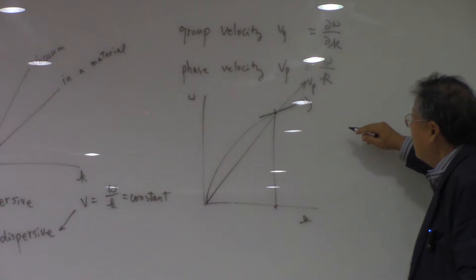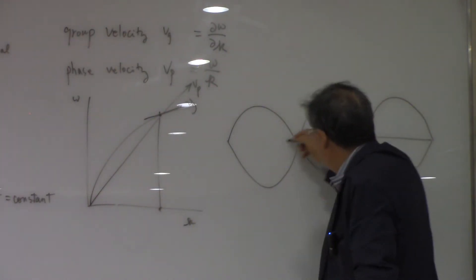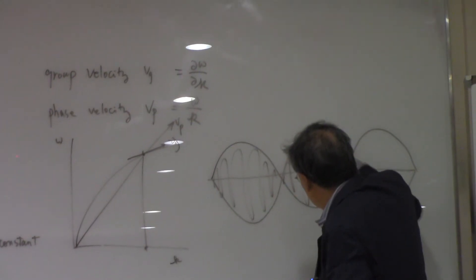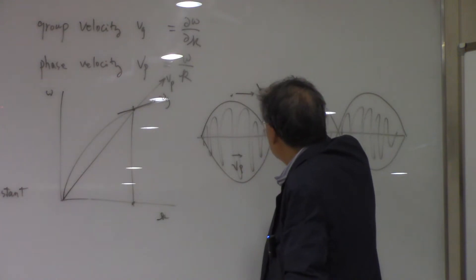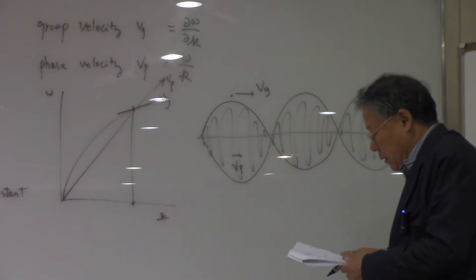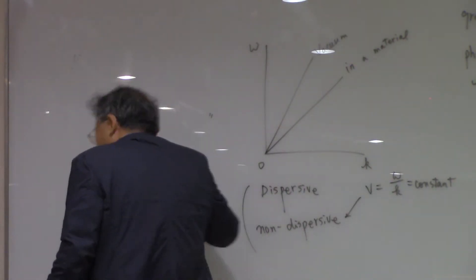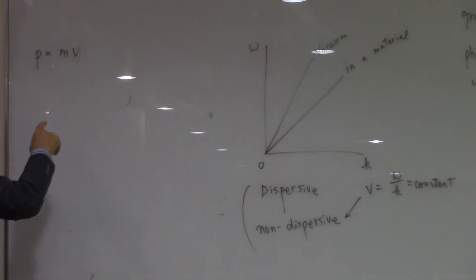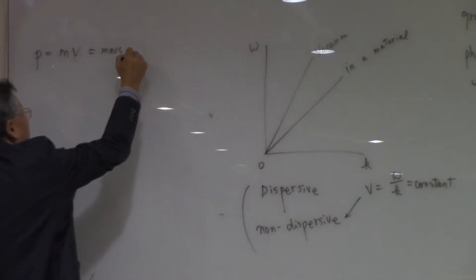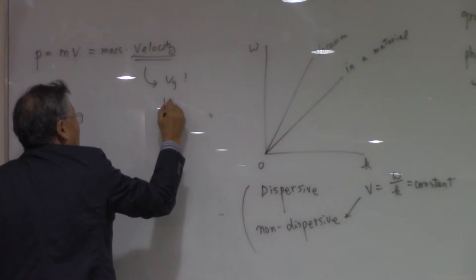A famous example of group velocity versus phase velocity is the standing wave with its nodes. The phase velocity corresponds to the overall wave velocity, while the node-to-node velocity is the group velocity. When we say the momentum is p = mv, we need to ask: is that velocity the group velocity or the phase velocity of the system?